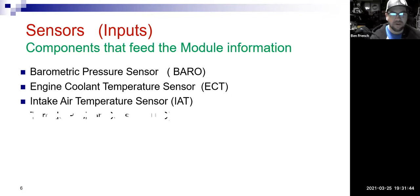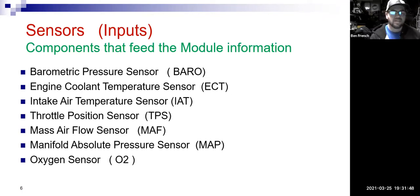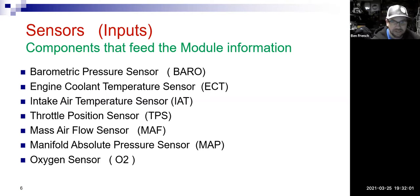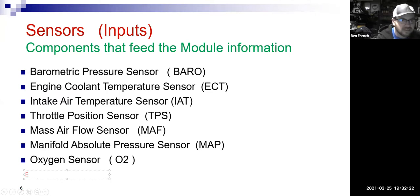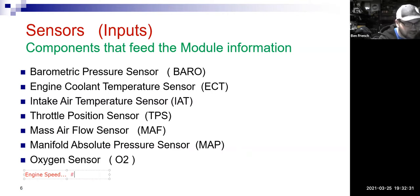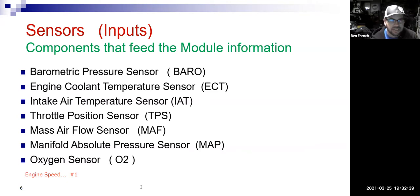Some various sensors: barometric pressure sensor, coolant temp, intake air temp, throttle position, mass air flow, manifold absolute pressure, oxygen sensor — those are major inputs that are pretty important information to the computer. The other one that's really important and not on here — I'll write it in red because it's so important — is engine speed. He's number one, the most important sensor. If the computer doesn't know the engine's even turning, why would it turn on the fuel pump, the fuel injectors, or fire the spark plugs?